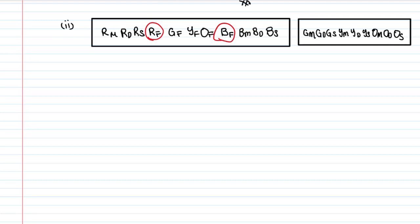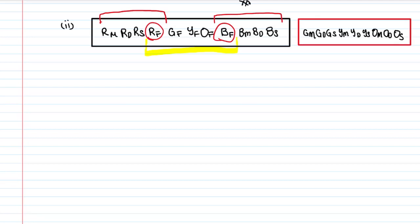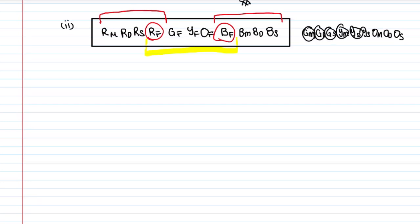So we have one whole group — the box containing red mother/daughter/son, the fathers group (red, green, yellow, orange father), and blue mother/daughter/son — as one object. The remaining nine members outside can permutate freely. With the box counting as one object plus nine others, we have 10 total positions, giving 10 factorial arrangements overall.